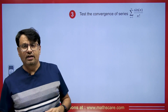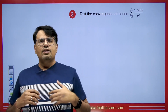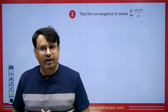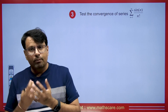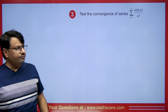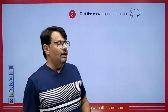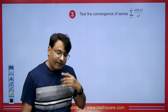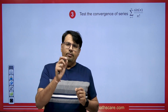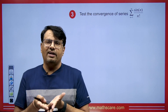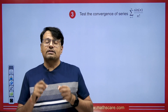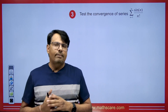In uniform convergence as well, we will find similar theorems. Now, how do you choose between Dirichlet and Abel? If you are given a series of type un·vn and one of them forms a convergent series, then use Abel to solve the question. If neither of the two series is convergent, apply Dirichlet's theorem.